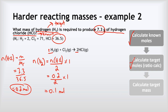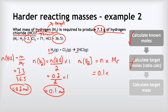All we've got to do now is calculate the mass of hydrogen. Mass of H2 equals n multiplied by Mr: 0.1 multiplied by the Mr of 2, so 0.1 multiplied by 2 gives us 0.2 grams of hydrogen as the answer.